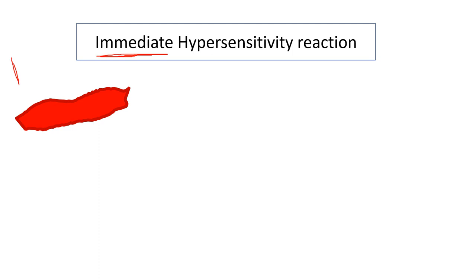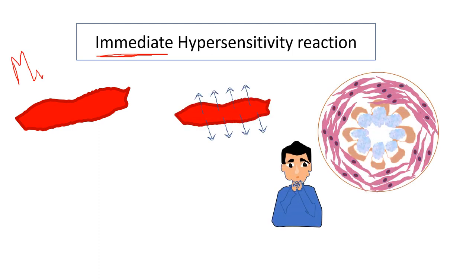The immediate hypersensitivity reaction which happens minutes after repeat exposure to allergen consists of vasodilation, vascular leakage, smooth muscle spasm, as well as increased mucus production.